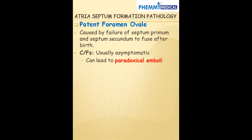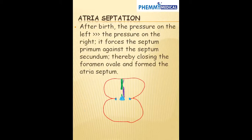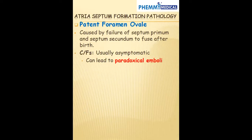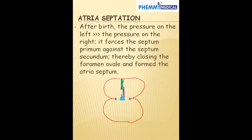Let's talk about the pathology associated with atrial septum formation. The first one is patent foramen ovale. Patent foramen ovale is when both the septum primum and septum secundum fail to fuse together — failure of fusion after the child is born. This condition is usually asymptomatic, but one of the complications is that it can lead to paradoxical embolism.